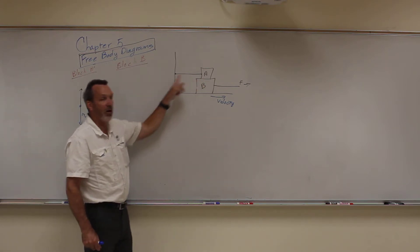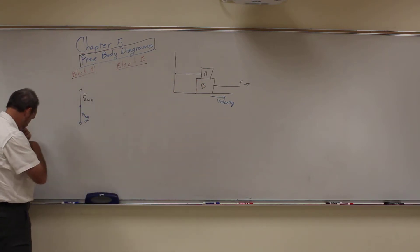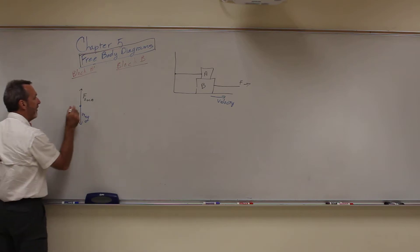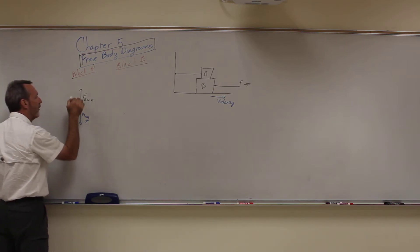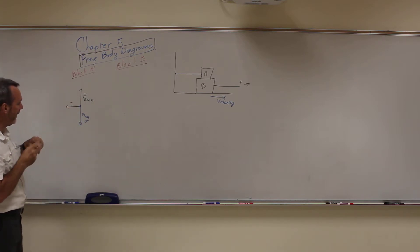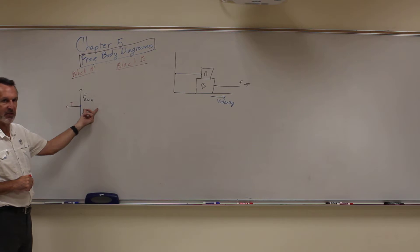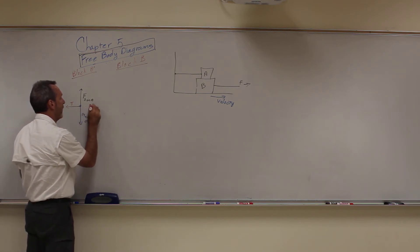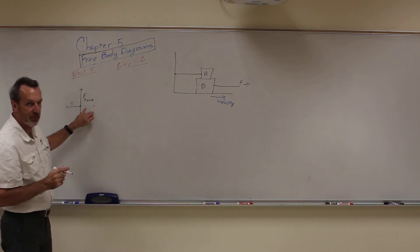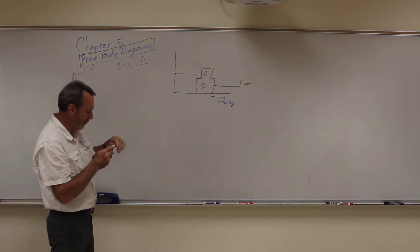Now block A also has a tension force. So there's a tension force right here going to the wall. Notice I made those the same length because the box is not moving up or down. There's a tension force to the wall but what's the force over here that's making it try to move? Okay, so there's a force here. But what is that force? We're going to figure that out, let's go through block B first.